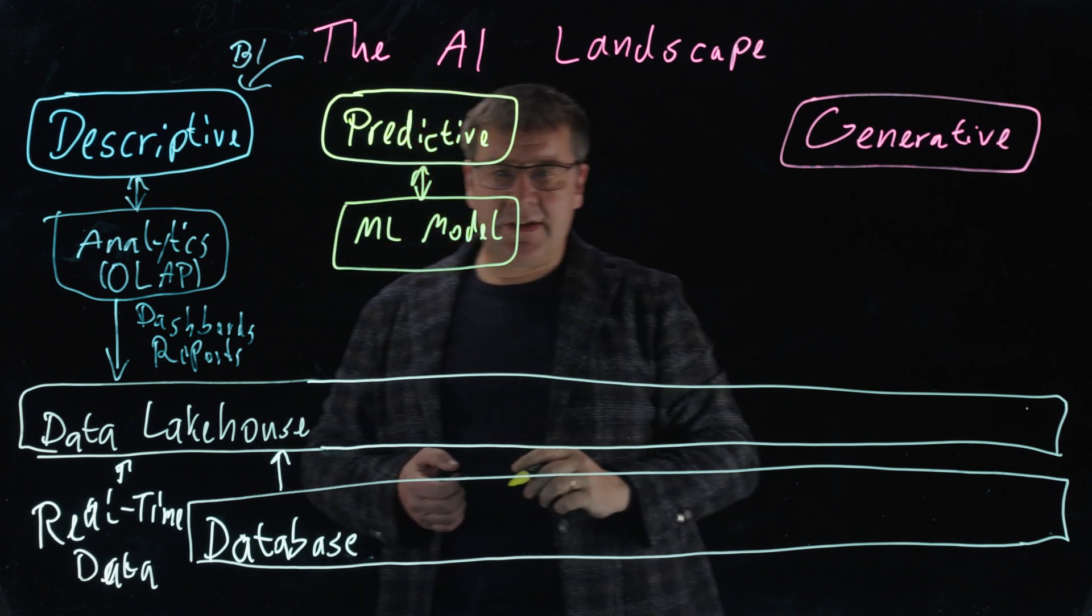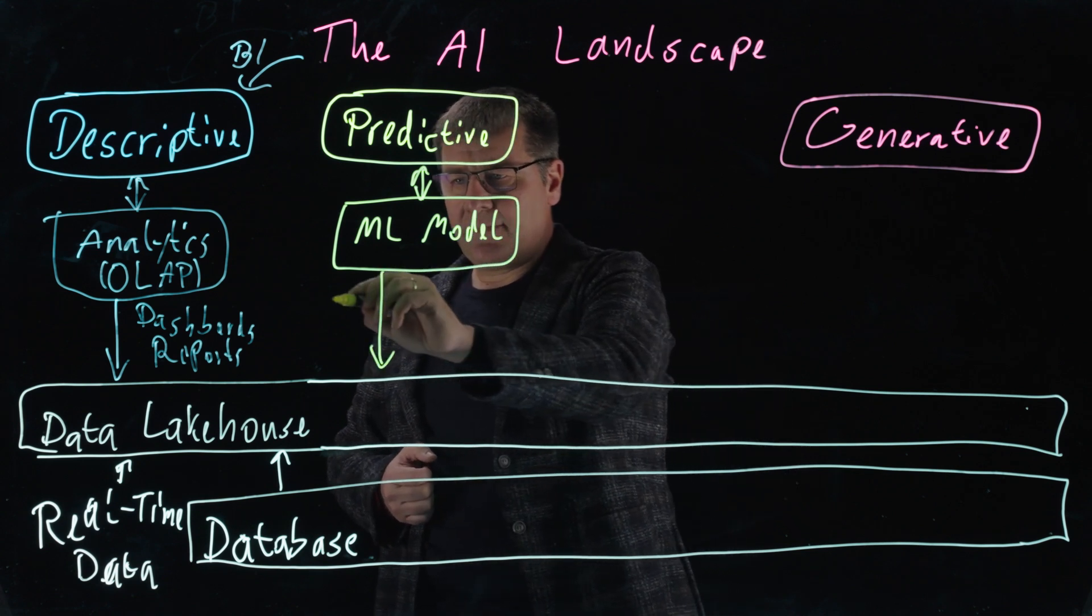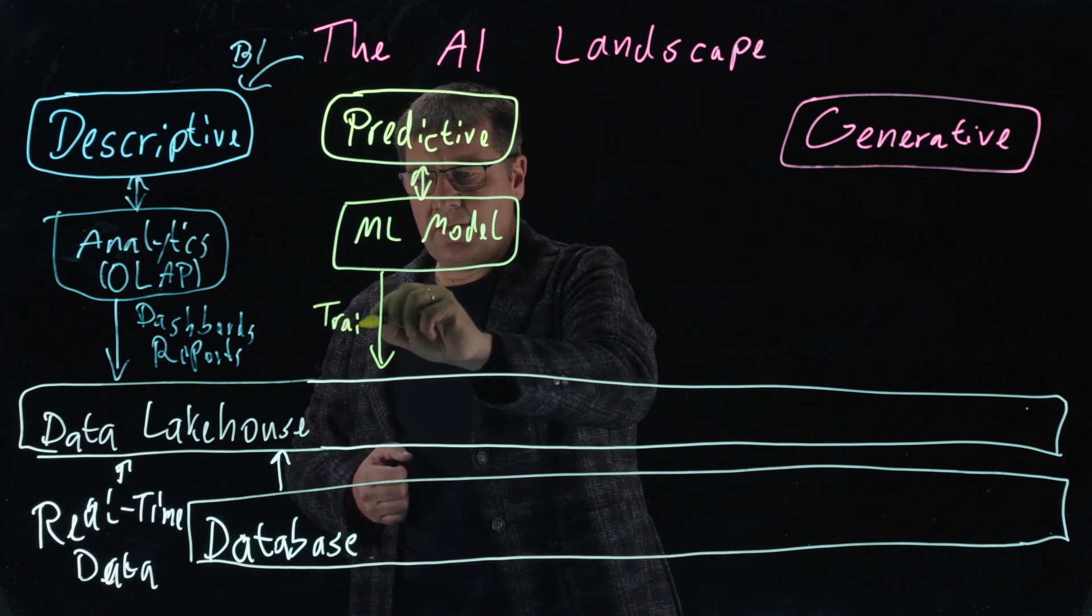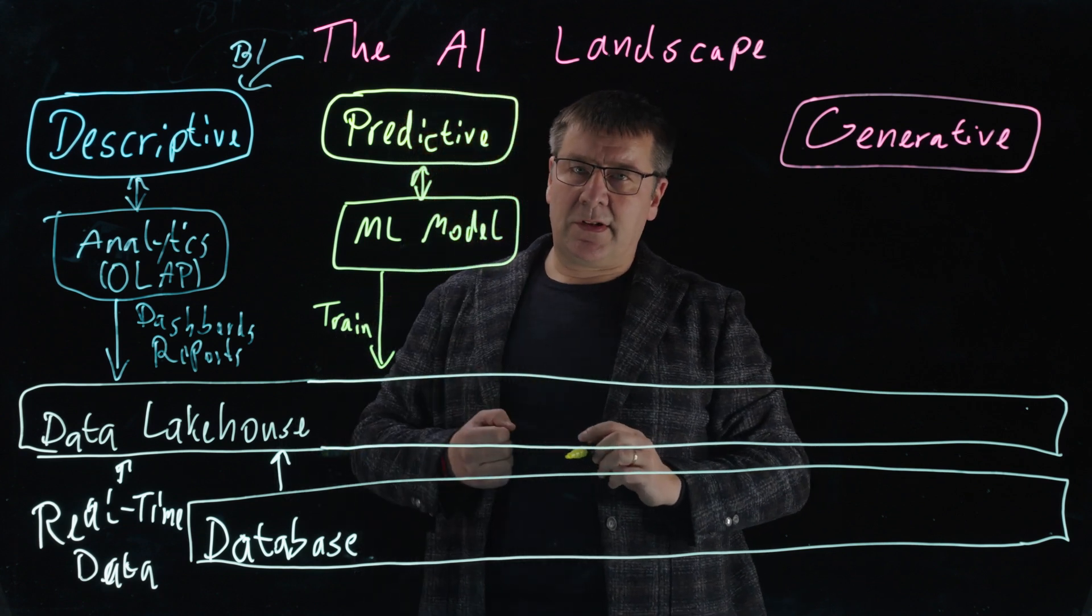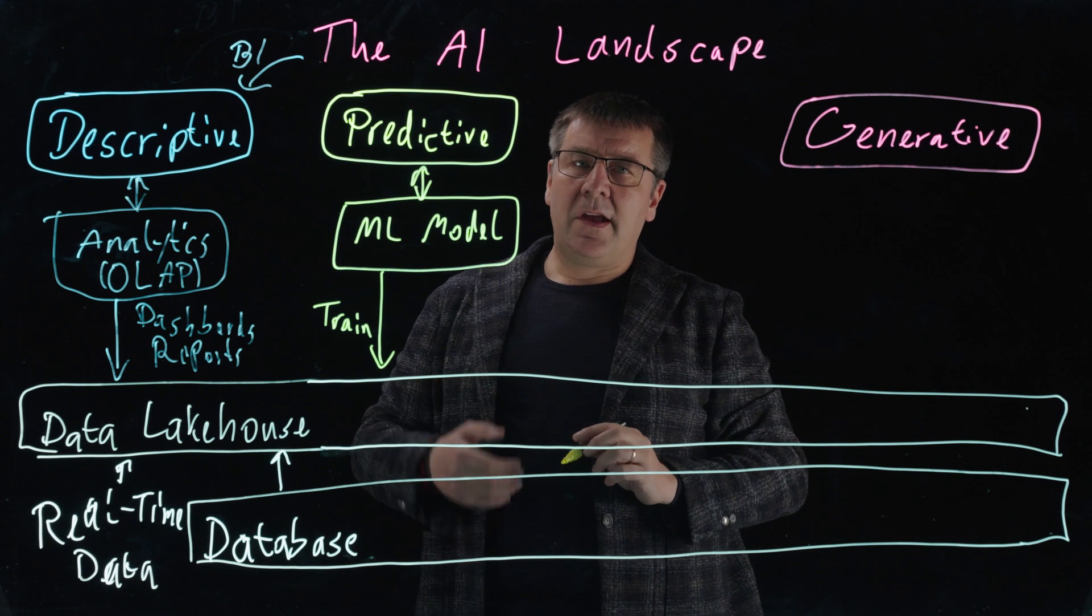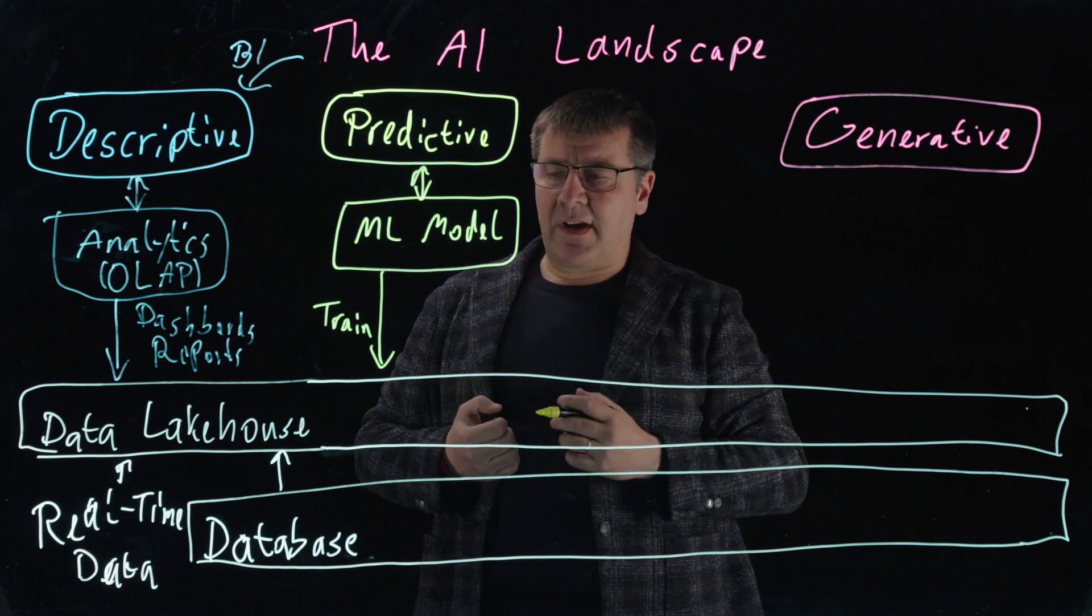The first thing is, you need to train such a model and you need data to train it. That's what the lakehouse is for. You train models on your data in a lakehouse. And then you're using this model in the second step in order to make predictions. And you make these predictions in situations when new data is arriving.